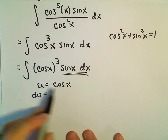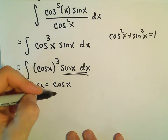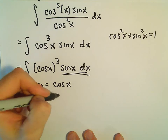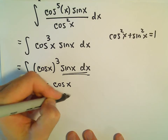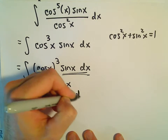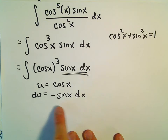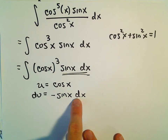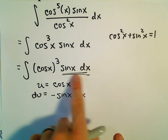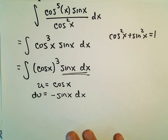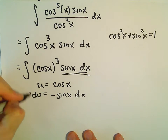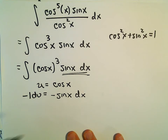So if we let u equal cosine, then du will be negative sine x dx. We don't want negative sine x dx — we want positive sine x dx. So we can multiply both sides by negative 1, which would make the right side into a positive sine x dx.